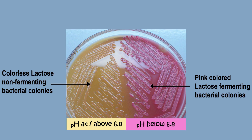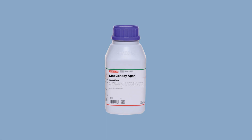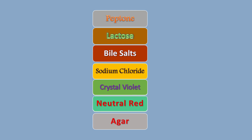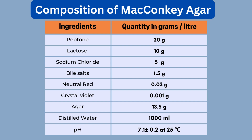Now let's discuss the composition of McConkie's Agar. If you don't have the commercially available McConkie's Agar media powder, you can make the medium by adding individual components: peptone, lactose, bile salt, sodium chloride, crystal violet, neutral red, and agar. This is the standard formula for making 1 liter of McConkie's Agar medium. Weigh all these ingredients, dissolve them in 1000 ml distilled water, and then adjust the pH to 7.1.